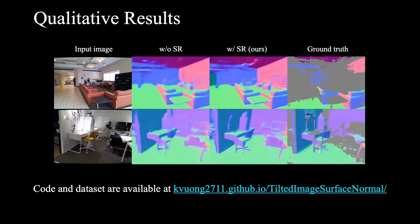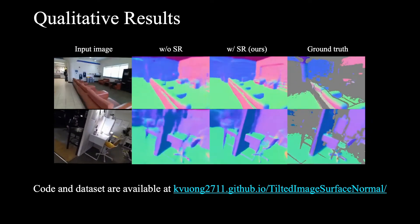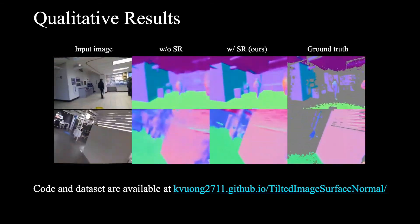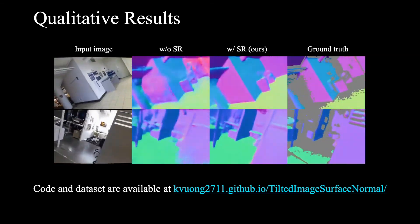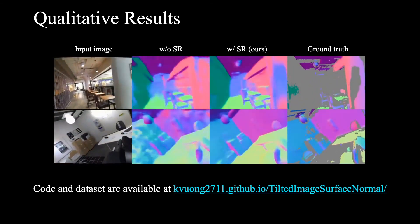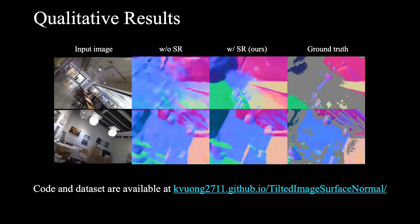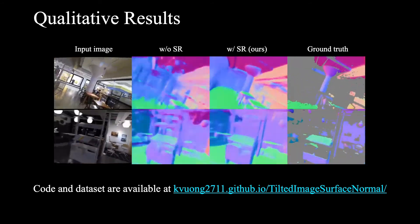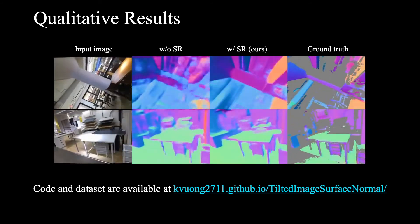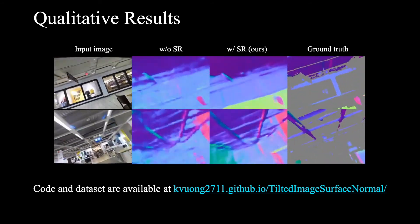Here we show some comparison. Our estimator can correctly predict surface normals of tilted images and significantly outperform the one without the spatial rectifier. The code and dataset are publicly available.